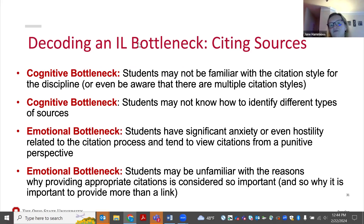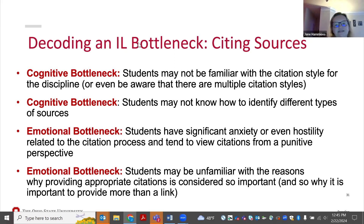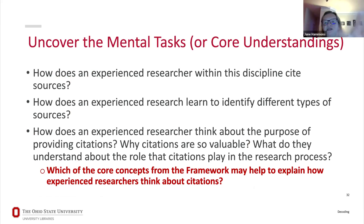Students may not be familiar with the citation style for that particular discipline, not be aware that multiple citation styles exist, and not know how to identify different source types — so they can't use citation guides because they can't tell the difference between a journal article, a book, and a website. There are also a lot of emotional bottlenecks around citations — anxiety, fear about plagiarism, thinking of citation as a punitive process where if you don't get it right you'll be punished. And they may simply not understand the why of citation, or even know that citation guides exist.